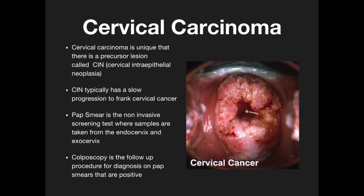The next neoplasm is cervical carcinoma. Cervical carcinoma is unique in that there's a precursor lesion called cervical intraepithelial neoplasia, or CIN, and this is what we're looking for when we're doing Pap smears. CIN has a slow-growing progression to frank cervical cancer. The Pap smear is a non-invasive screening test where samples are taken from the endocervix and exocervix. Colposcopy is a follow-up procedure for diagnosis on Pap smears that are positive.